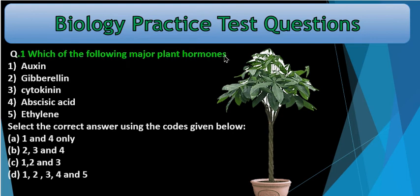Which of the following are major plant hormones? 1. Auxin, 2. Gibberellin, 3. Cytokinin, 4. Abscisic acid, 5. Ethylene. Select the correct answer using the codes given below.